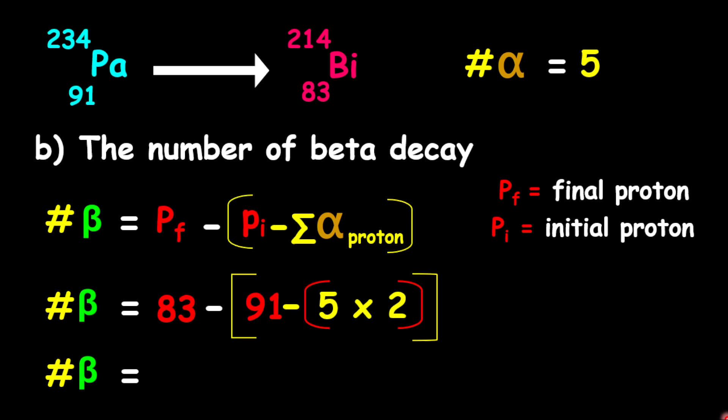So therefore, what we have here is 83, which is our final proton, minus the initial, minus that of the alpha. And so therefore, it's going to be 83 minus 91, minus 10. And so therefore, we have 82. So we have our total there of two beta decays, or two beta particles.